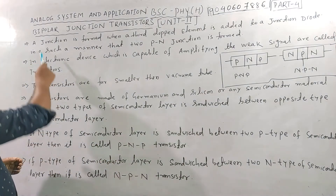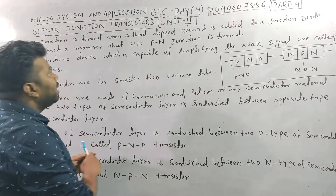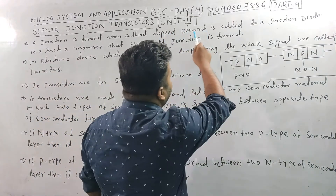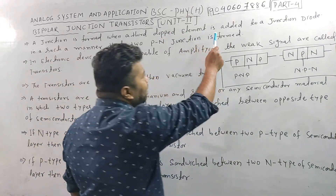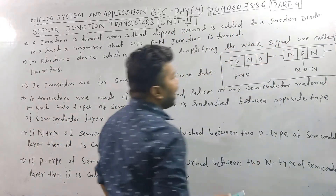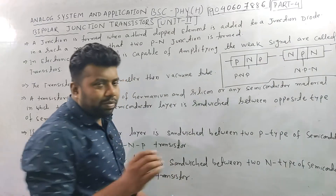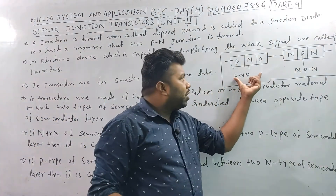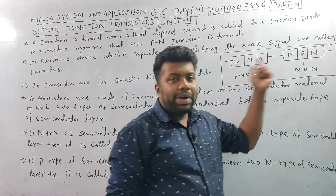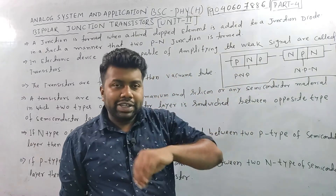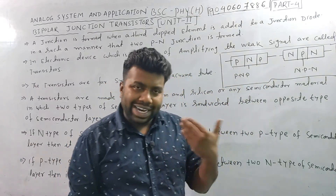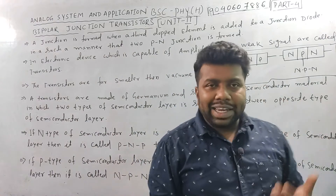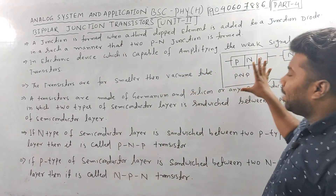The junction is formed when a third doped element is added to the junction diode. This forms P, N, P and NPN configurations. The transistor is like a triode. This is the diagram.